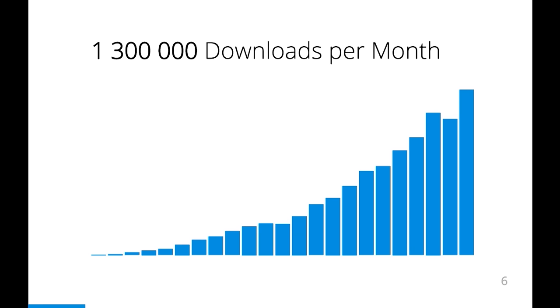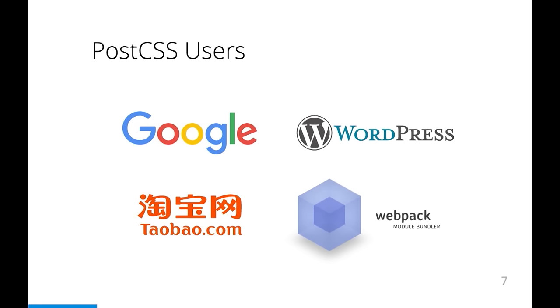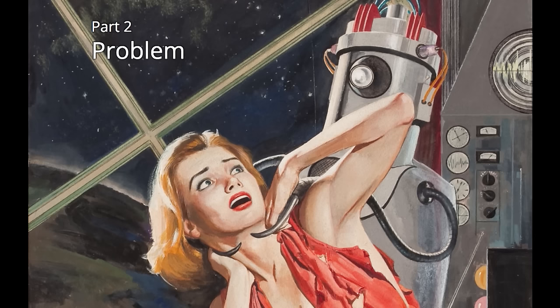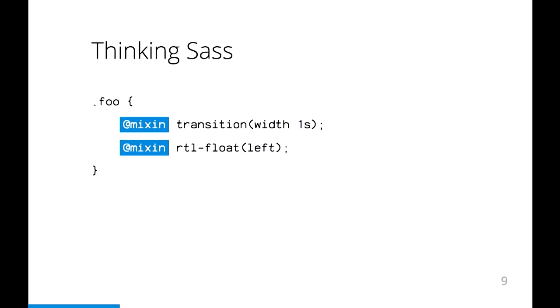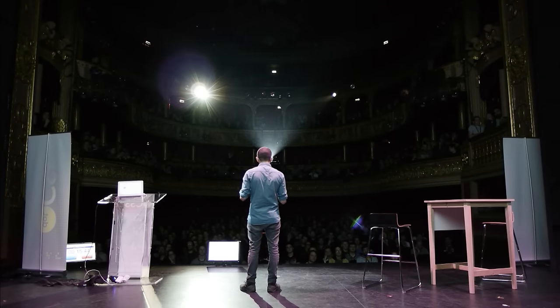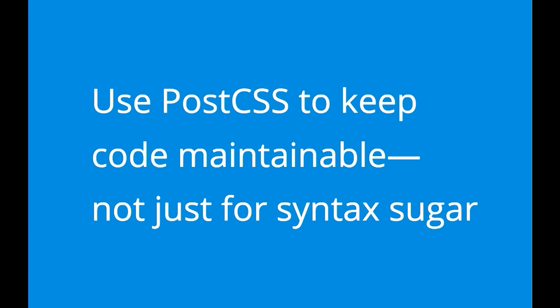PostCSS is a new project, but it grows very fast. We have more than one million downloads per month, and PostCSS is used by big companies. But as any new project, it has a problem. Unfortunately, we lived too many years in the era of Sass stagnation. Sass is very good for its tasks, but it has many limits, and those limits came to our minds. With PostCSS we can do anything, but people ask me only about nested mixins — and that is a problem. My main advice is to use PostCSS not only for syntax sugar like mixins or variables, but for real, important, maintainable tasks.